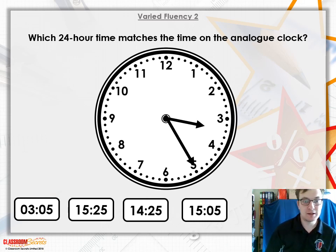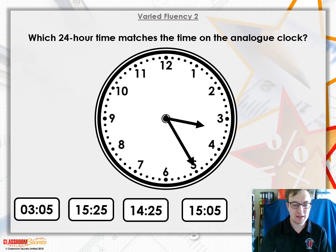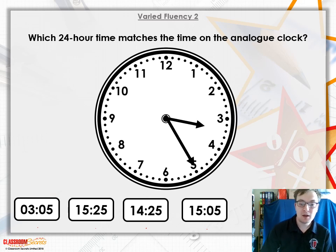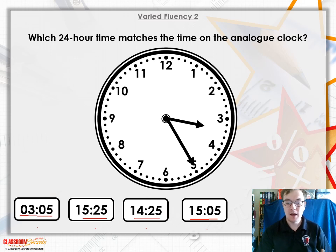For the second question, I'd like you to work out which 24-hour time matches the time shown on the analog clock. We have our analog clock and digital times below: five past three, twenty-five past three, twenty-five past two, and five past three. Some are evening times and one is a morning time, so let's work out which one matches.